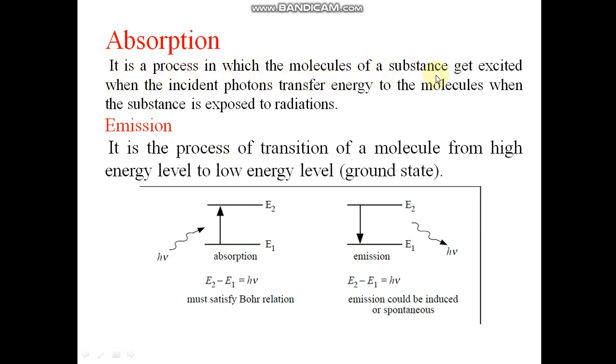Absorption: It is a process in which the molecule of a substance get excited when the incident photon transfer energy to the molecule when the substance is exposed to the radiation. Molecule absorbs energy and goes to excited state. Emission: It is the process of transition of a molecule from high energy level to low energy level ground state. This excited molecule emits energy and comes back to ground state, this is called emission.